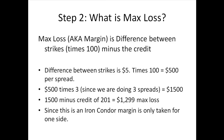Step two: what is the max loss? The formula is: max loss equals the difference between the strikes times 100 minus the credit. In this scenario, the difference between the strikes is $5 — he used the 250 and 255 strikes on the calls, and 190 and 195 on the puts. Five dollars times 100 equals $500 per spread. We're doing three spreads, so multiply by three: $1500 total.